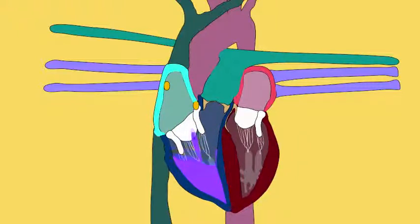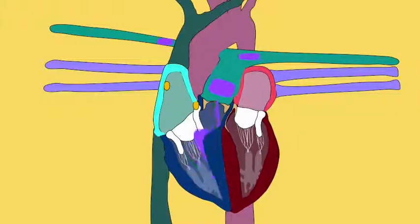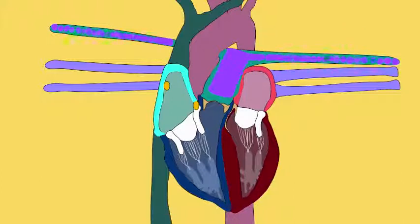The right ventricle contracts and pumps this deoxygenated blood away from the heart. This blood does not return to the brain, the hand, the digestive system, or other body systems, because this is deoxygenated blood which has just returned from these systems. Instead, this blood goes to one place only, the lungs.